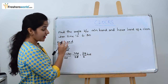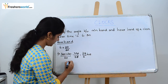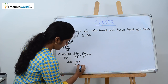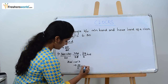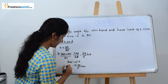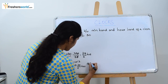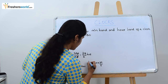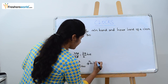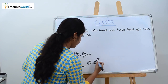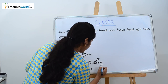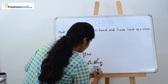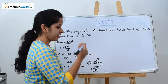We know the hour hand moves 360 degrees every 12 hours. We have 39/6 hours, so the angle x equals 360 into 39/6, divided by 12. Calculating this gives us 195 degrees. So the hour hand is at 195 degrees.